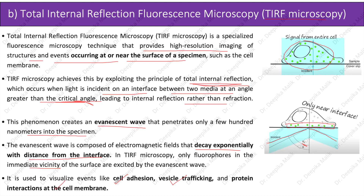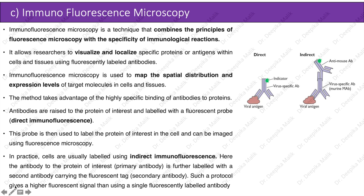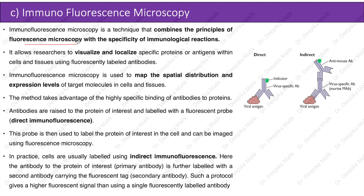Immunofluorescence Microscopy is a technique that combines the principles of fluorescence microscopy with the specificity of immunological reactions. It allows researchers to visualize and localize specific proteins or antigens within cells and tissues using fluorescently labeled antibodies, and is used to map the spatial distribution and expression levels of target molecules.